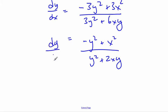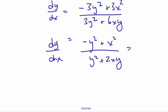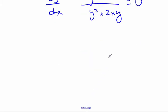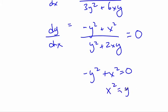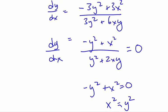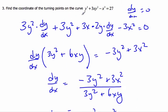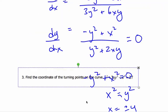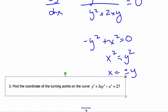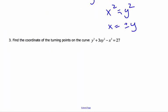This is the derivative. To find turning points, the derivative equals 0, meaning the numerator minus y squared plus x squared equals 0. So x squared equals y squared, which gives x equals plus or minus y. Our turning points exist when x equals plus or minus y.